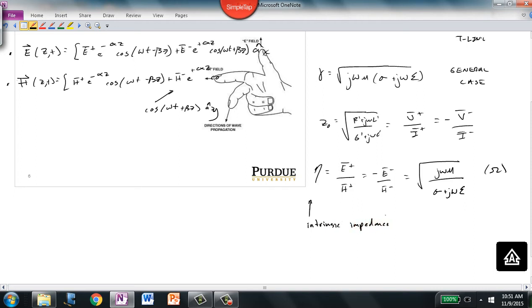Most often, we'll use the intrinsic impedance to relate the amplitude of the E fields and the H fields. Notice that, like the propagation constant, it's calculated both based on operating frequency and on material properties of the substance or material that the plane wave is propagating in.